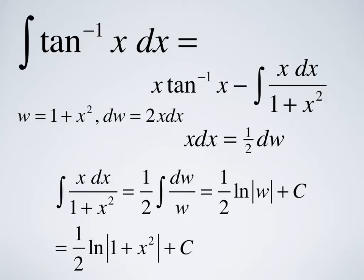The integral of x dx over 1 plus x squared equals 1 half integral of dw over w, which is 1 half natural log of the absolute value of w, plus the constant of integration. And using our substitution, we have 1 half natural log of 1 plus x squared plus C.